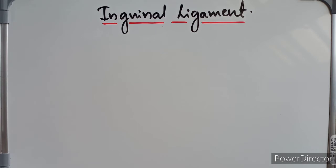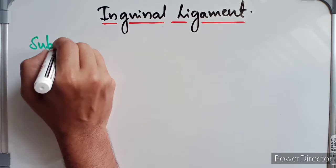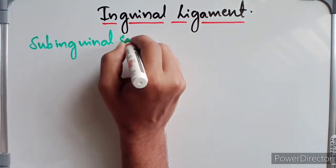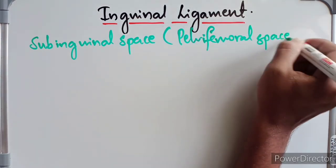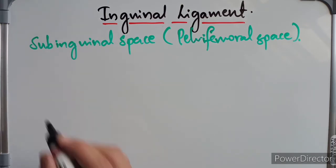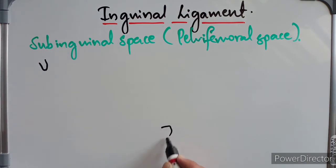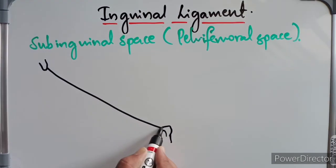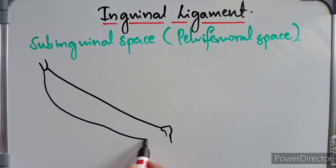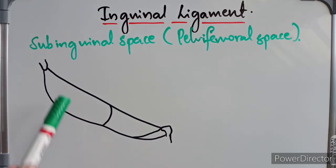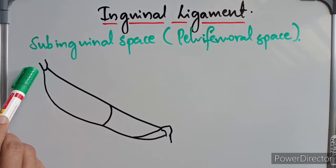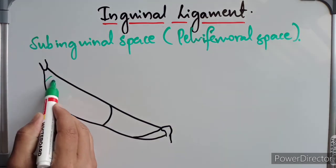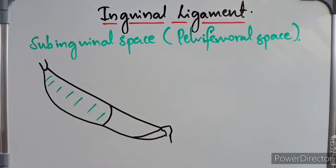The sub-inguinal space is also called the pelvifemoral space. Here we have the anterior superior iliac spine and the pubic tubercle — this is the inguinal ligament — and then we have the iliopubic tract, attached by the ilioinguinal ligament, pectineal ligament, and the lacunar ligament. The area between these is the sub-inguinal space.